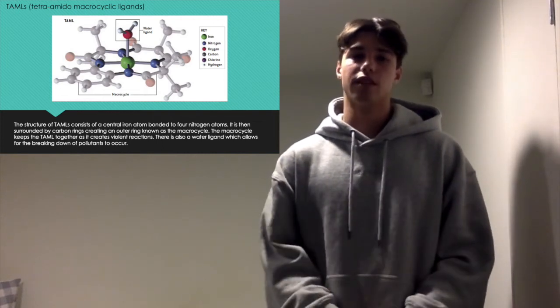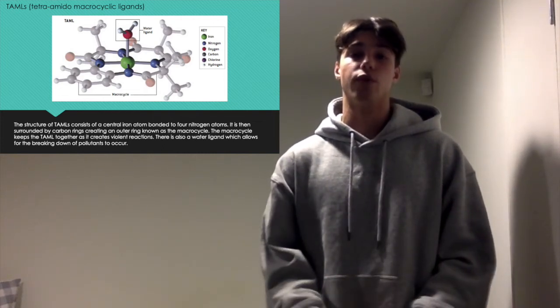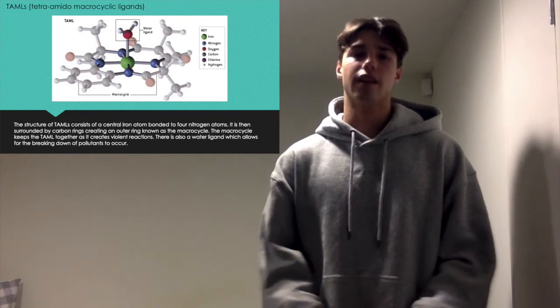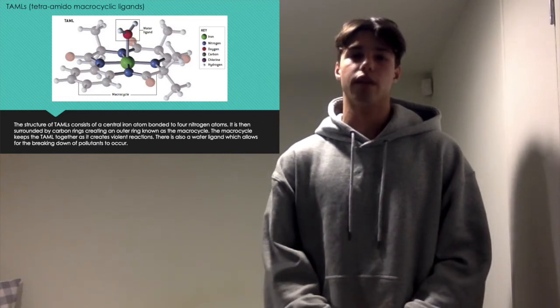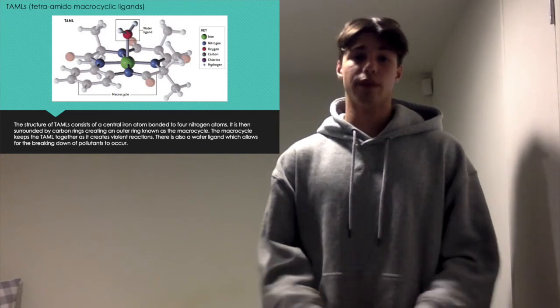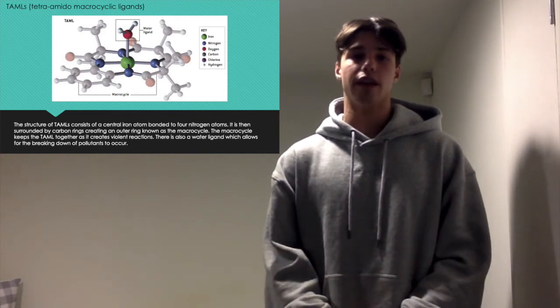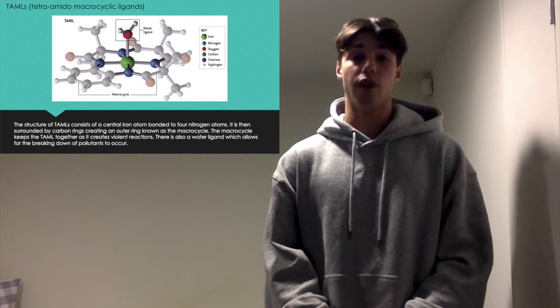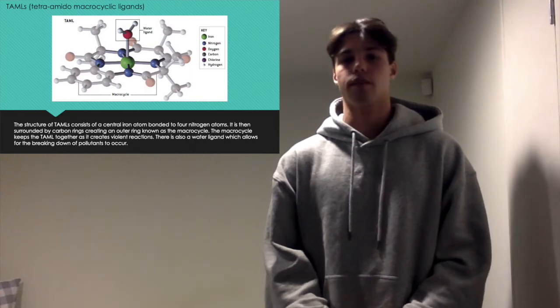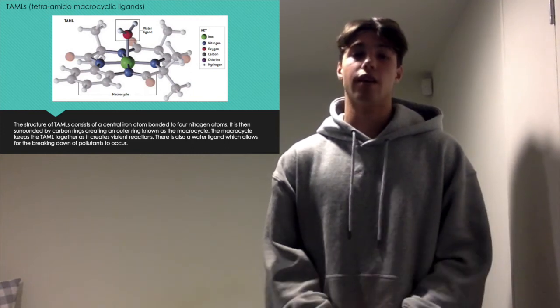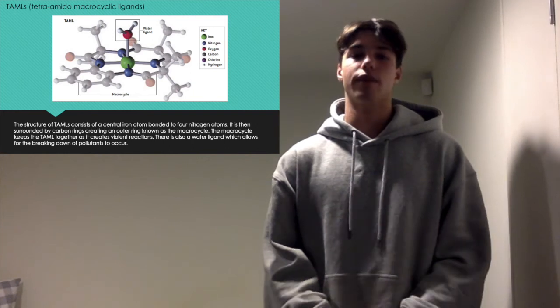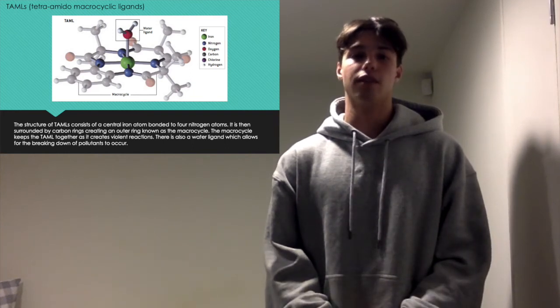The TAMILs' structure consists of a central iron atom bonded to four nitrogens. Surrounding that are carbon rings linked to form an outer ring called the macrocycle. This outer ring provides stability to the molecule and allows the molecule to survive the violent reactions it creates. The TAMILs also contain a water ligand. A ligand being the functional group which is bonded to the central iron atom.